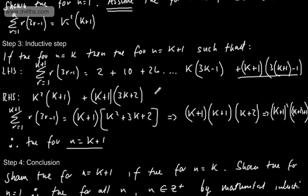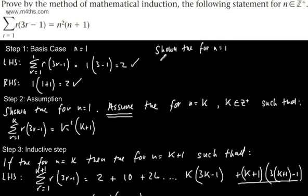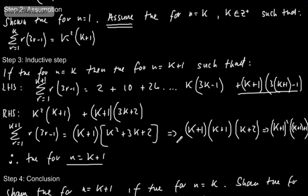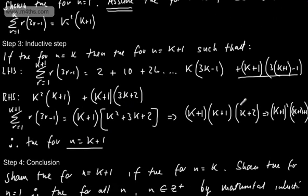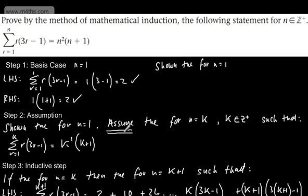That's a nice example of a basic summation. To recap the four steps: basis case — sub n equals 1 into both sides and show they're equal; assumption — assume true for n equals k where k is a positive integer; inductive step — if true for n equals k show it's true for n equals k plus 1 using algebraic manipulation; conclusion — state true for all positive integers n by mathematical induction.